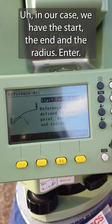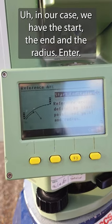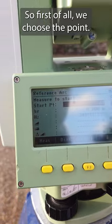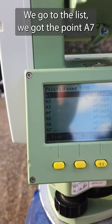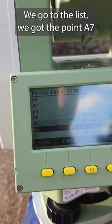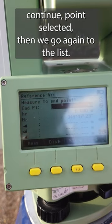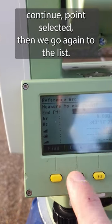In our case, we have the start, the end, and the radius. Enter. So first of all we choose the point, we go to the list, we got the point A7, continue, point selected.